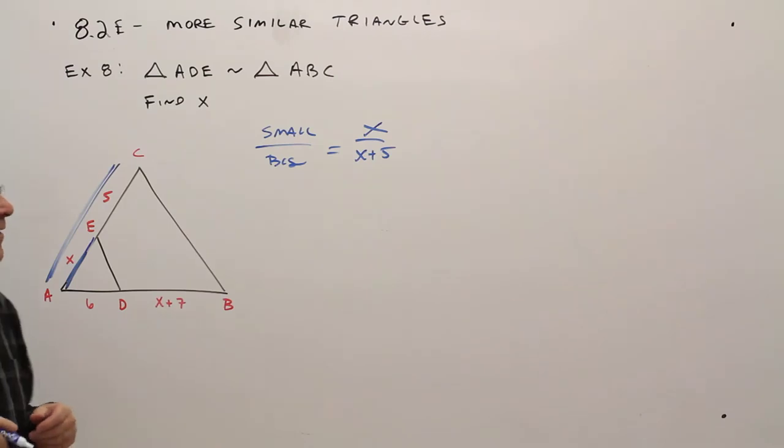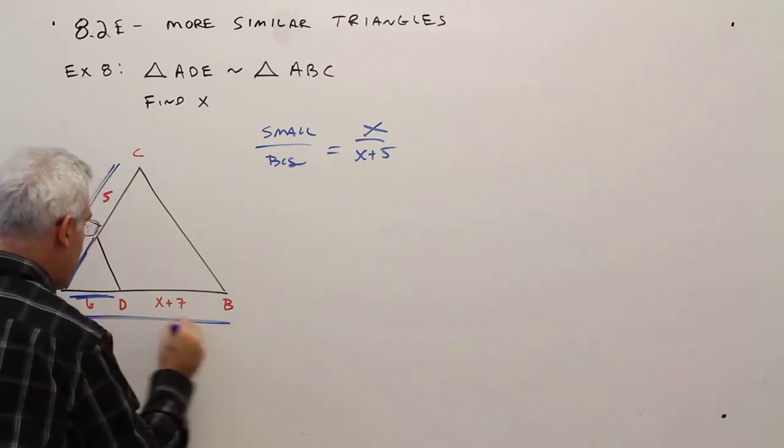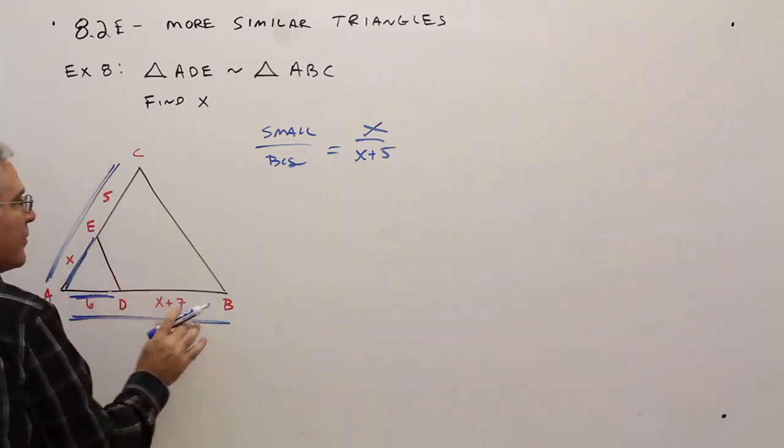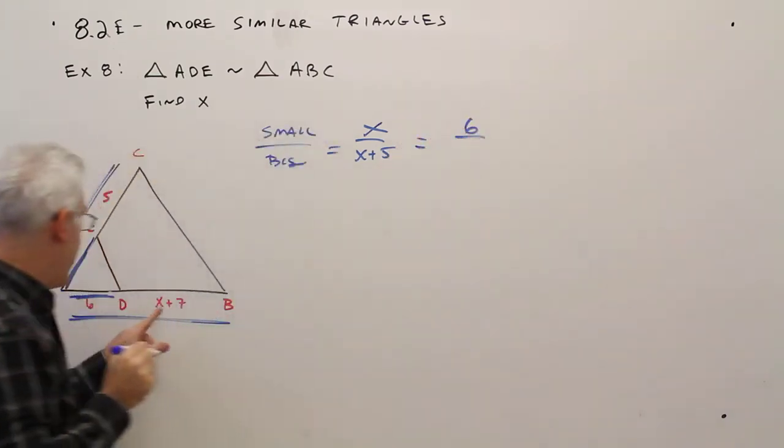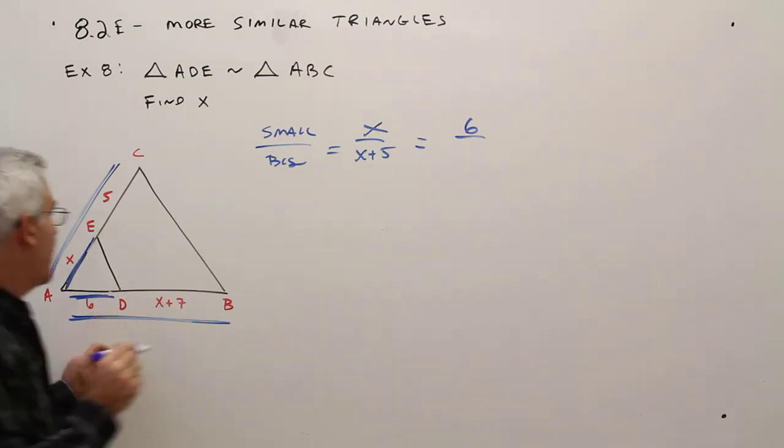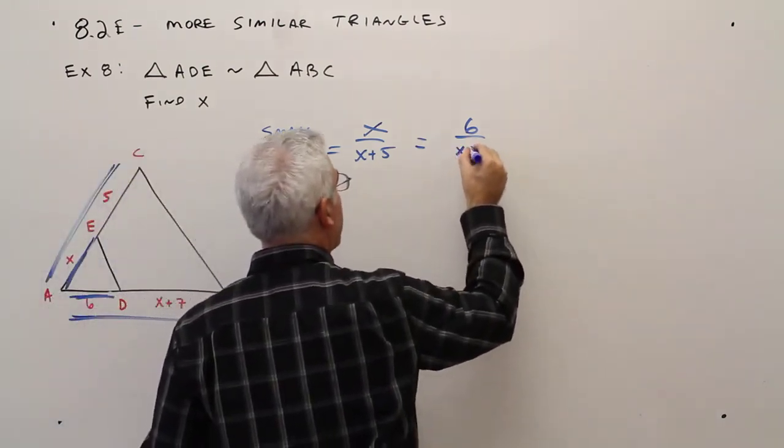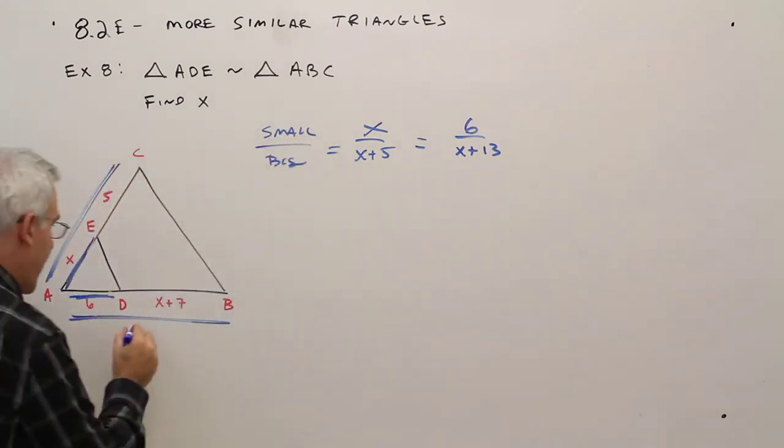Okay I could also say hey small over big is that to that. 6 over, that would be X plus 7 plus 6, X plus 13. I'll just make a note of that.